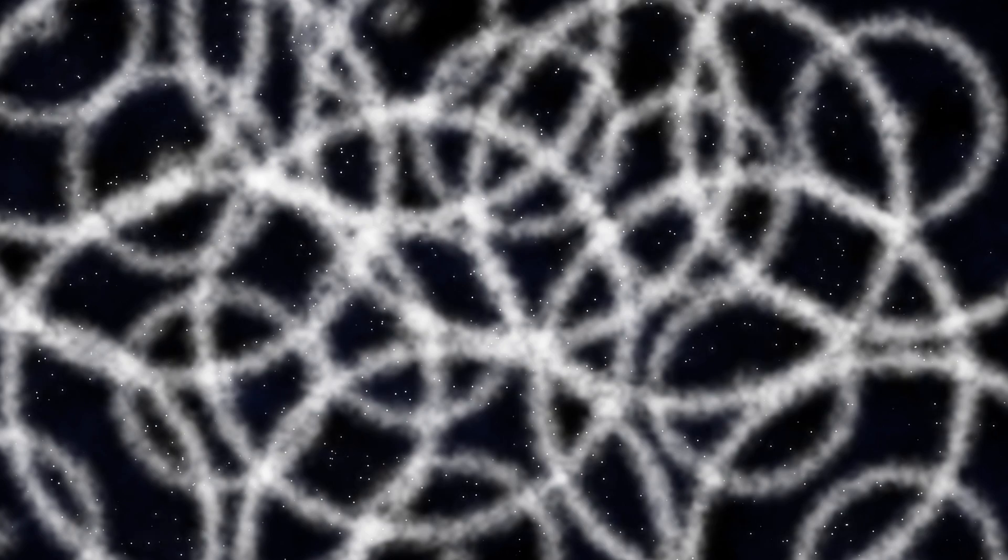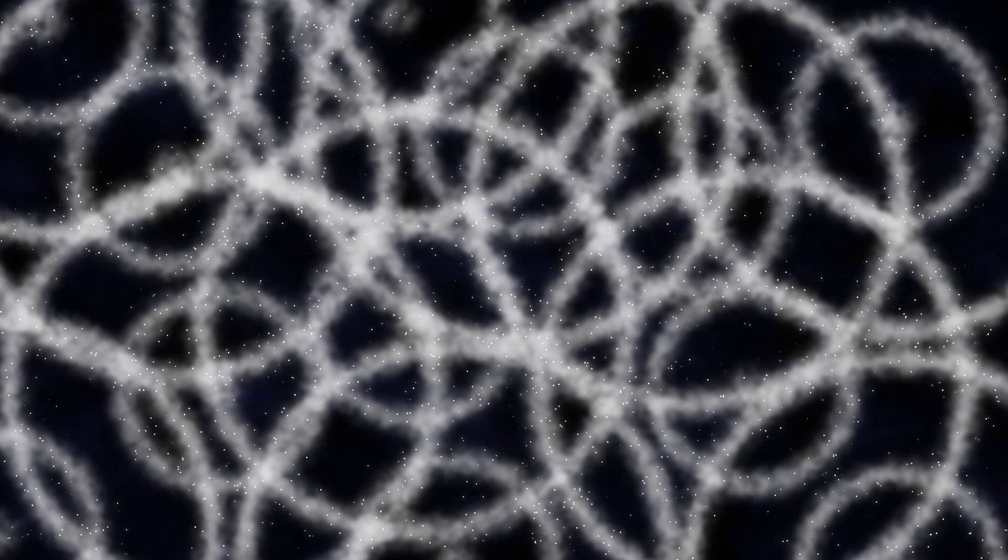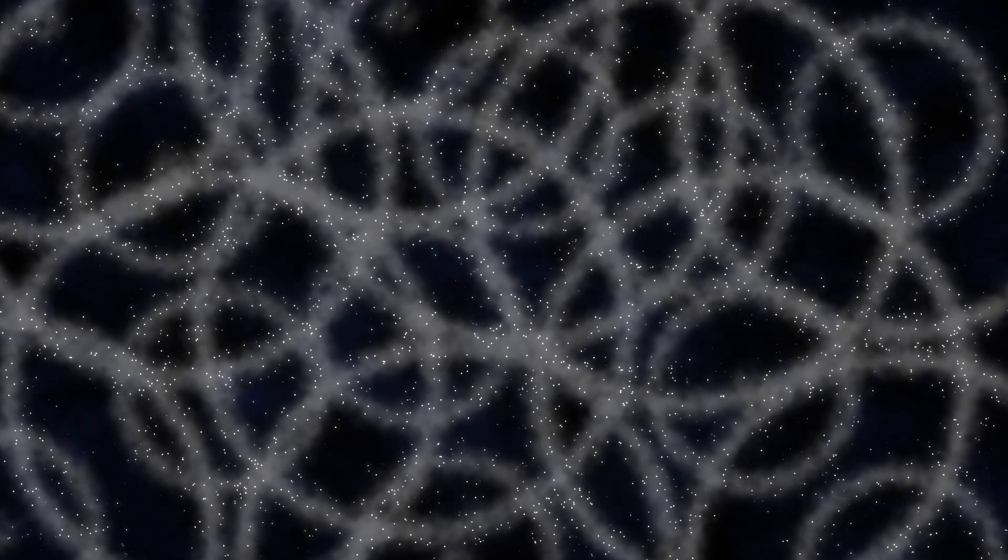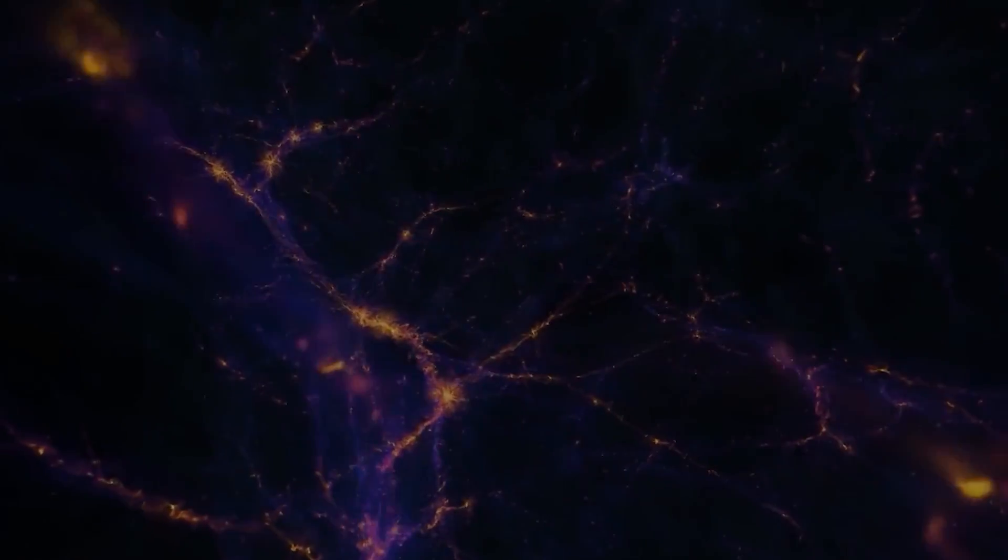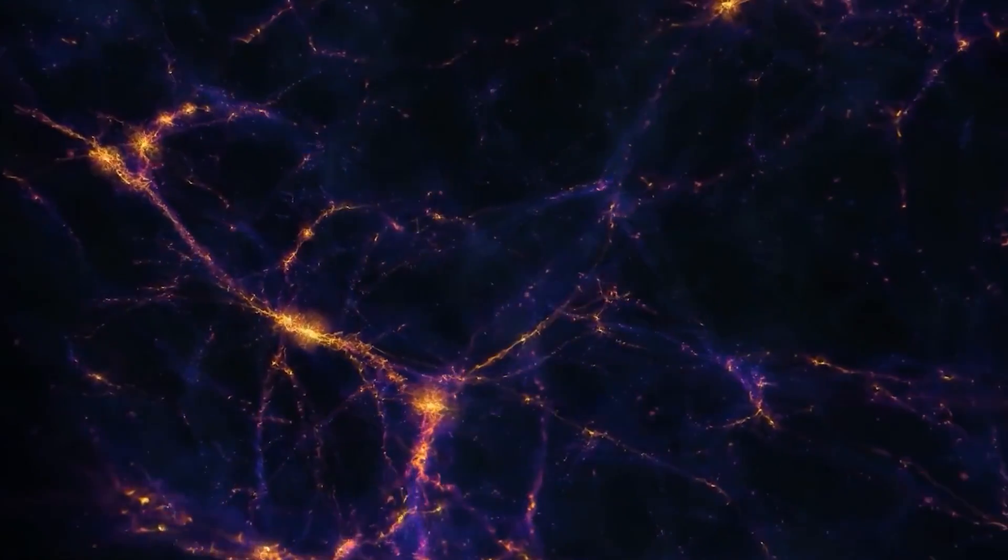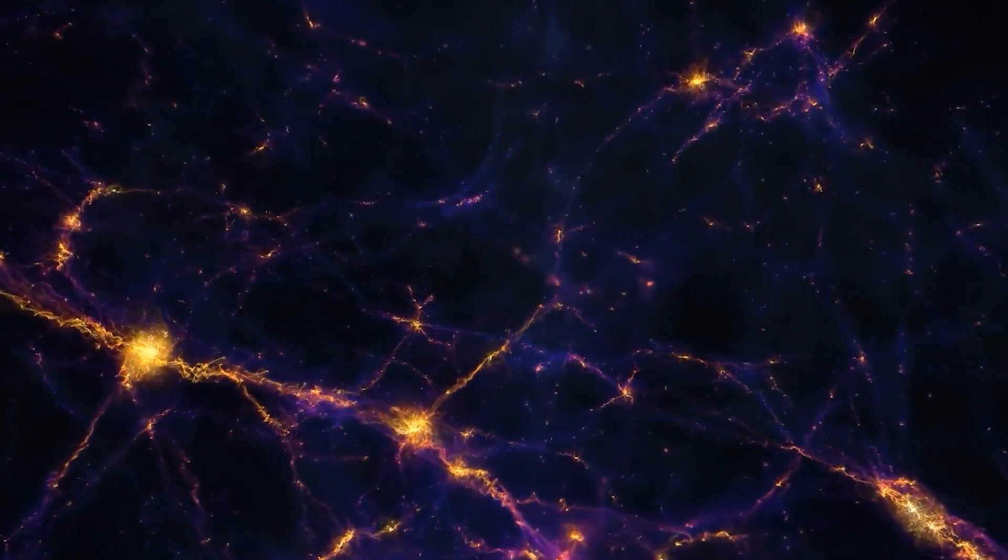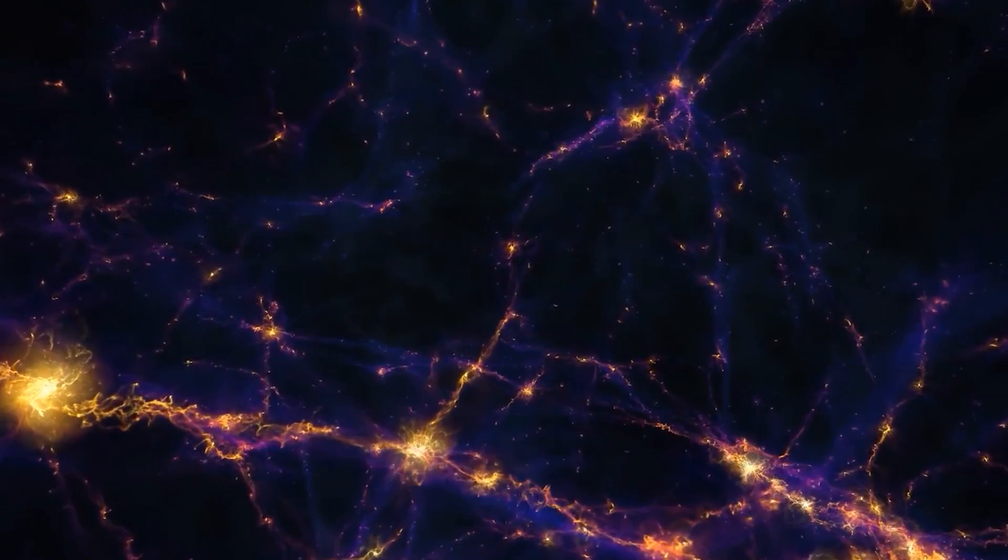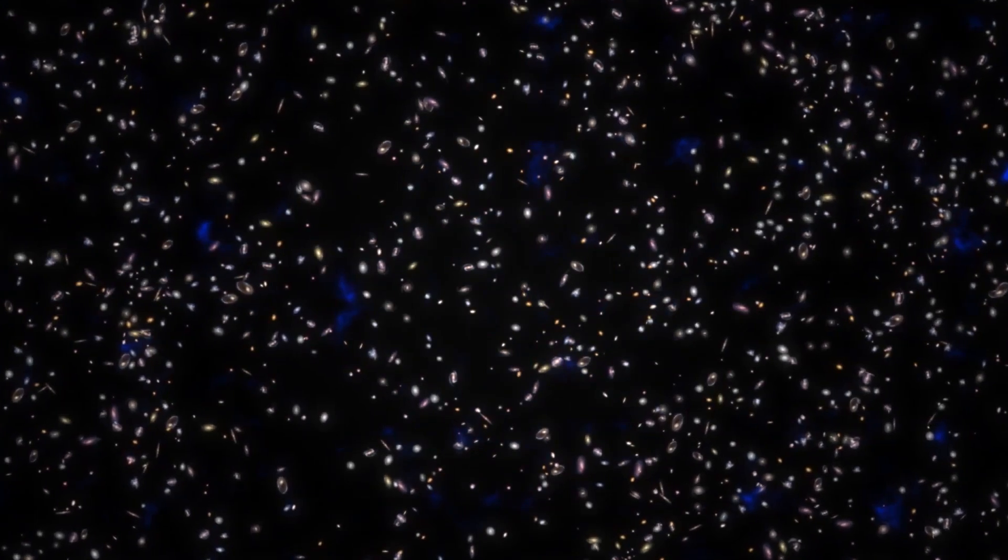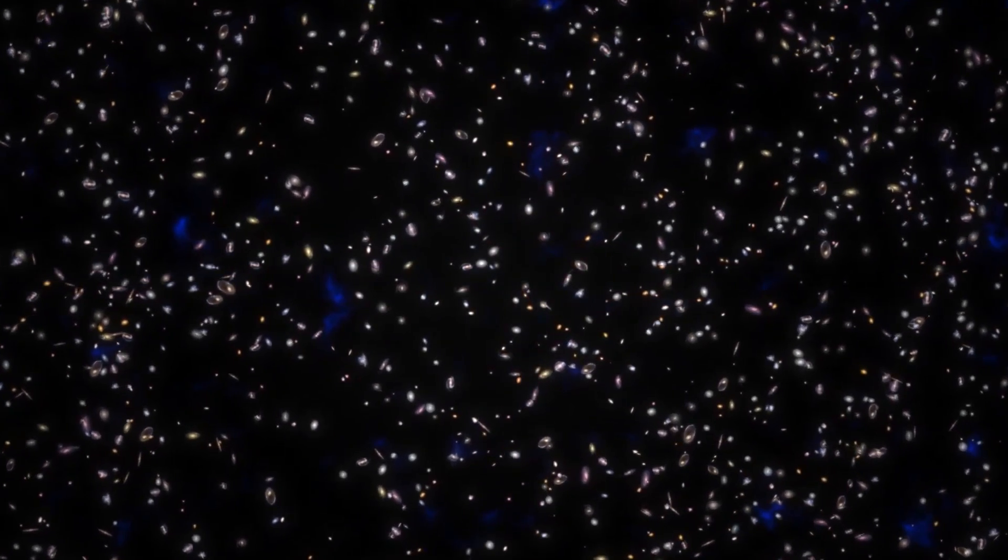As the universe continued to evolve, stars, galaxies, and other similar objects formed more frequently in regions of higher density, while areas of lower density had fewer such objects. This means that the distribution of galaxy clusters across the sky should not be entirely uniform. We should observe more and less densely populated regions arranged according to periodic patterns, corresponding to the wavelength of baryon acoustic oscillations in the early universe. Naturally, these patterns would be scaled up due to the universe's expansion.